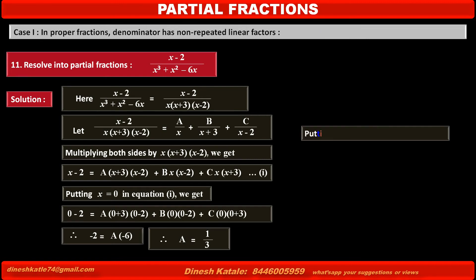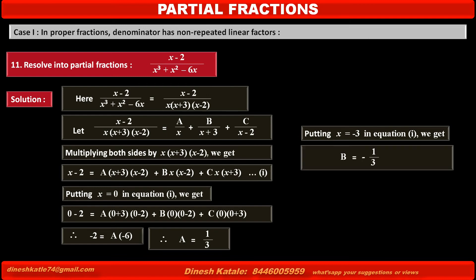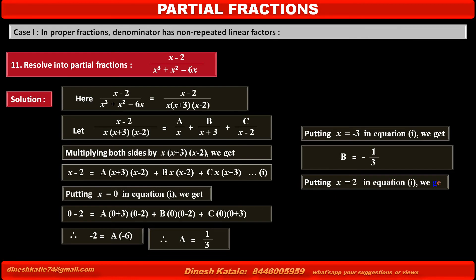To find the value of B, putting x equal to minus 3 in equation 1, we get B equal to minus 1 upon 3. Similarly, to find the value of C, putting x equal to 2 in equation 1, we get C equal to 0.